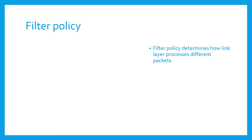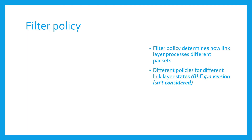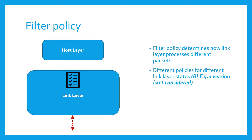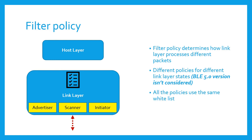Now let's understand how the filter accept list is implemented. There is something called a filter policy, which determines how the link layer processes various transmissions. There are different policies for different states of the link layer — advertising filter policy, scanner filter policy, and initiator filter policy. All the policies use the same filter accept list.